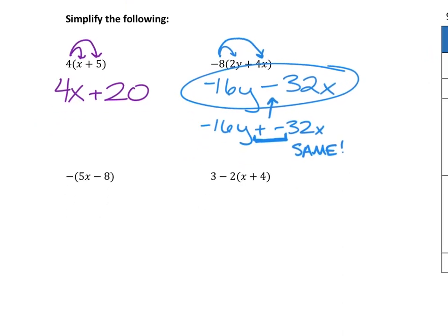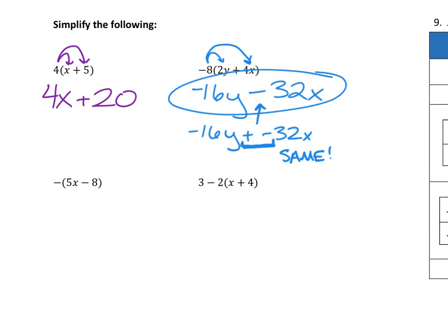Now, if we look at this next one, the next two are kind of tricky. What number is actually sitting in front of this parentheses right here? That's an invisible one. So if I distribute that invisible one inside the parentheses, we're going to end up with negative 5x and the negative 1 times negative 8 is positive 8. Because a negative times a negative is a positive.